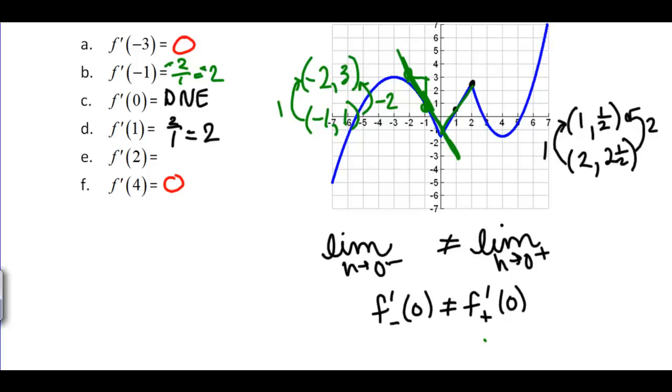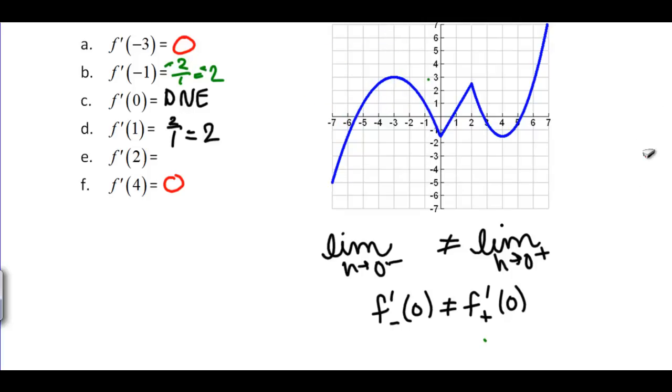Alright we've got one more tangent line to do and that is f prime of 2. But f prime of 2 is going to have the exact same problem that we had at zero. It's got this sharp corner here and this sharp corner is going to tell us that if I take the tangent line, if I look at the tangent line on the left side and the tangent line on the right side, their slopes are not going to agree. So again we're going to get DNE.